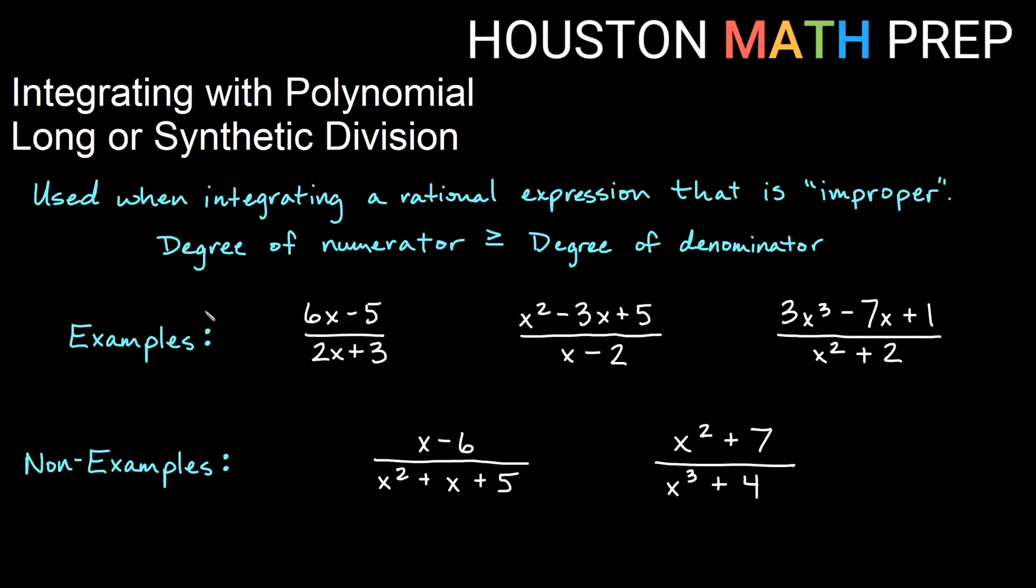We're going to do these three examples in this video. This one we have degree one on top and degree one on bottom, because the highest power of our variable is just simply the x term. Here we have a square term as our highest power, so that's degree two, this is degree one, so again the top has at least as much degree as what's on bottom. In our next one we have degree three on top and degree two on bottom, so the numerator has at least the degree of the denominator.